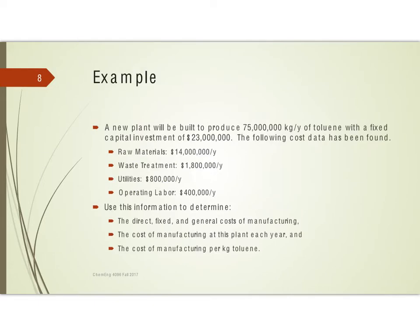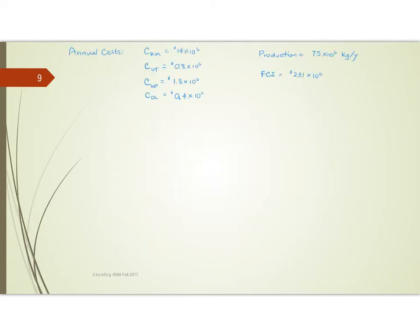Let's look at an example. We want to build a new plant to produce 75 million kilograms per year of toluene, with a fixed capital investment of 23 million dollars. The cost data are: 14 million per year in raw materials, 1.8 million in waste treatment, 800,000 per year in utilities, and 400,000 per year in operating labor. We want to figure out the various manufacturing costs. These given values are rewritten in the notation for the formulas, with all annual costs and the FCI listed.